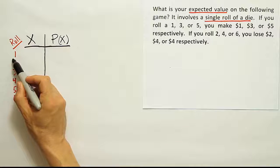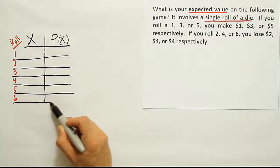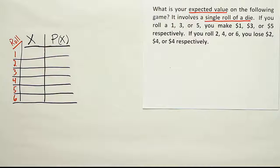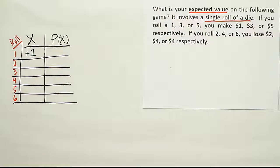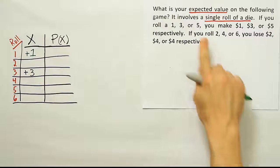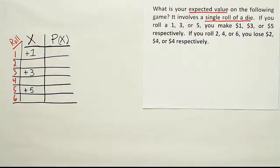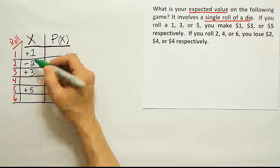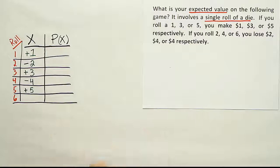Now let's make rows in our table based on those outcomes, with corresponding dollar amounts — positive for gains, negative for losses. If I roll a 1, I make $1, so plus 1. If I roll a 3, I make $3, so plus 3. If I roll a 5, I make $5, so plus 5. For the losses: roll a 2, lose $2, so minus 2. Roll a 4, lose $4, so minus 4. And if I roll a 6, I lose $4 again — minus 4.